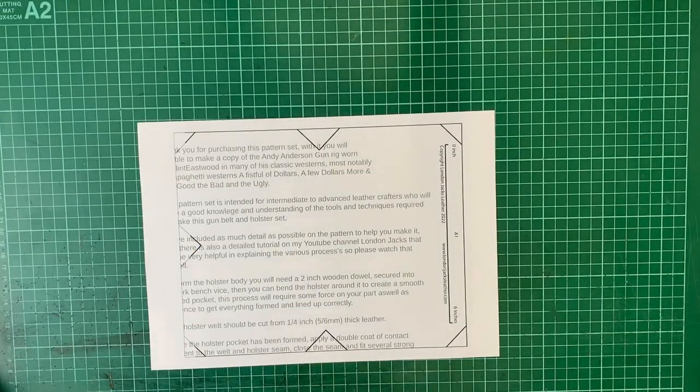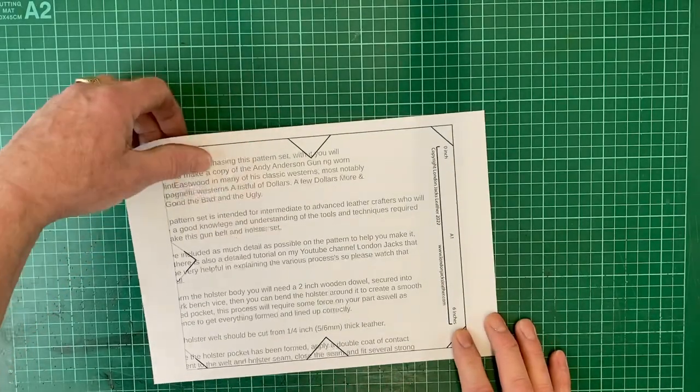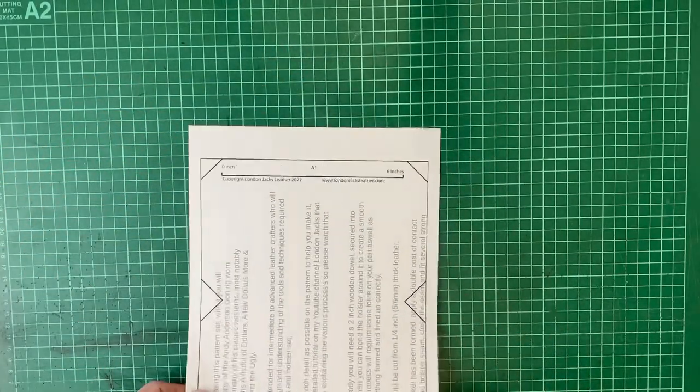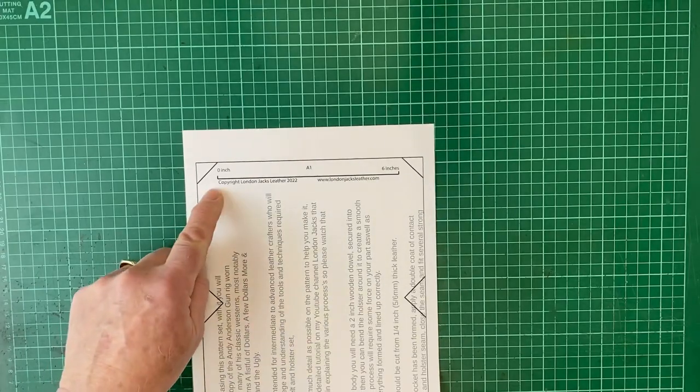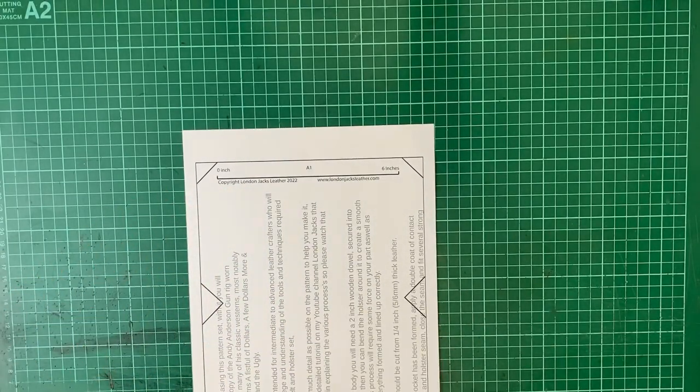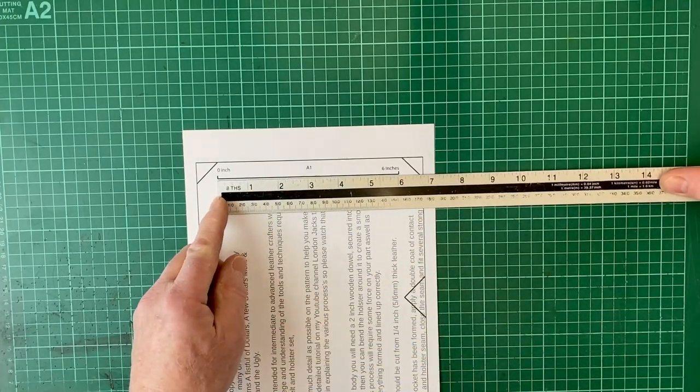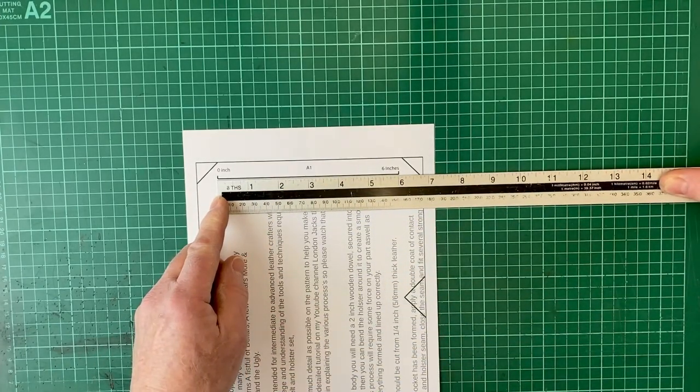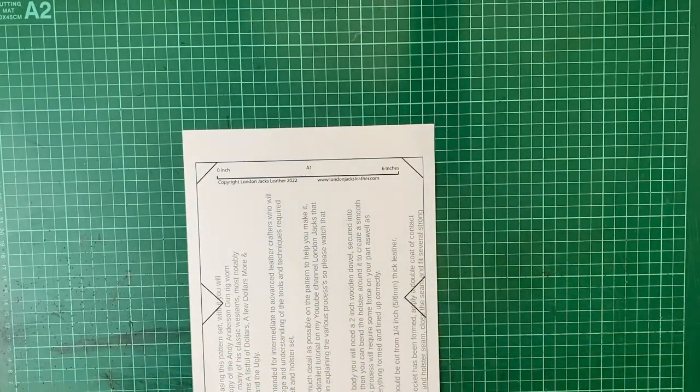First thing I recommend is checking that your printer will print actual size. You do not want it to vary the dimensions of the pattern in any way. As this is a 16-page PDF, I recommend you just print page number one because on there is a scale marking for six inches. If you print that one off and it measures exactly six inches, you'll know that the printer is printing to actual size and the rest of the pattern will come out as intended.